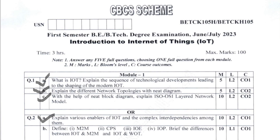Finally, the question is: Define M2M, CPS, IOE, and IOP. Brief the difference between IoT and M2M, and IoT and WoT. You are going to explain all four — M2M, CPS, IOE — in detail, and show the differences between IoT and WoT, and IoT and M2M. That carries 10 marks.